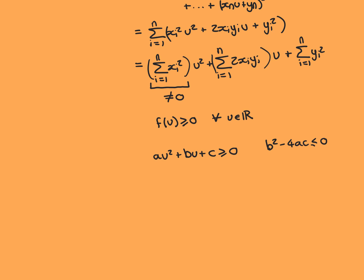Now, some theory about quadratic functions that you will have seen before, but we need to do it formally because this is analysis. If you've got a quadratic function au² + bu + c, where a, b, and c are the coefficients in front of the degree 2, degree 1, and degree 0 terms respectively, and you know that this quadratic function is greater than or equal to 0 everywhere for all u, then you can conclude that the discriminant b² − 4ac must be less than or equal to 0. I want to explain rigorously why you're able to conclude that.